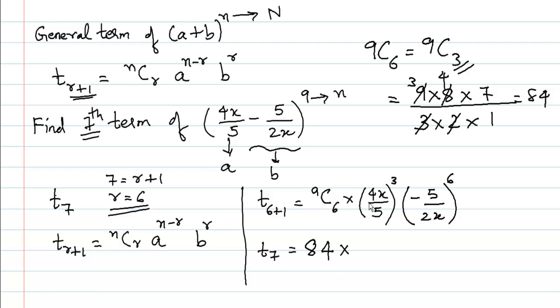Then we have 4^3 × x^3 / 5^3. 4 cubed is 64, x cubed is x^3, and 5 cubed is 125 (5×5×5). Multiplied by (-5)^6. Since -5 × -5 six times, and -5 × -5 = 25, we can write 25 three times, all over 2^6 = 64 × x^6.